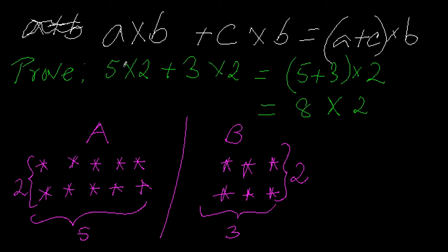Here we have taken a formula: a×b + c×b = (a+c)×b. To prove that, we take some numbers. Take an example like this: 5×2 + 3×2 is equal to (5+3)×2, or 8×2. How can we explain that?